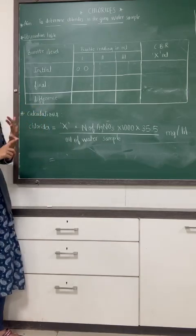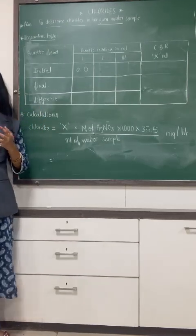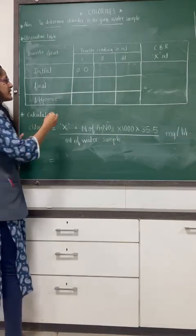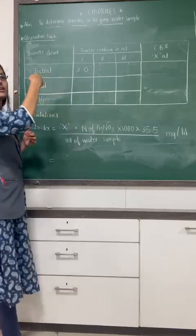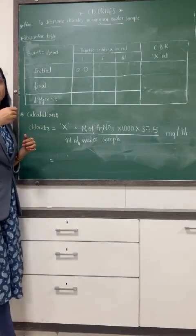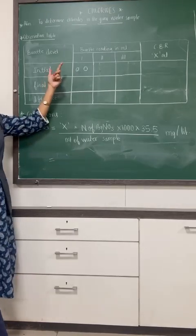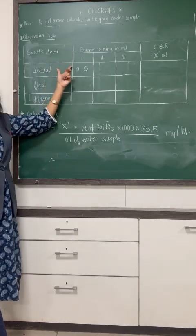When you have taken the water sample, you added the potassium chromate as an indicator which gives the yellow color and you titrated that yellow color with the silver nitrate. You have started initially from zero. So initial for the fluoride content is zero.